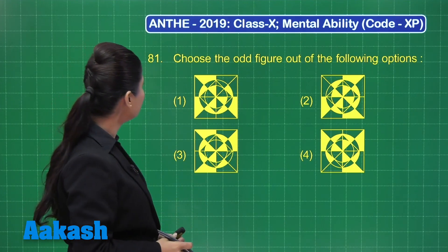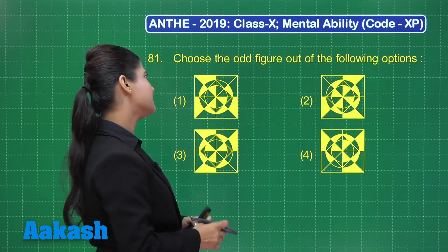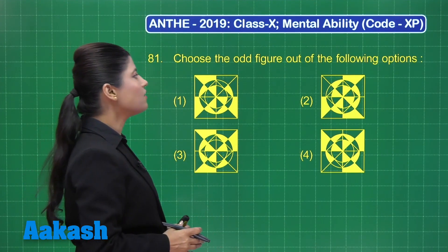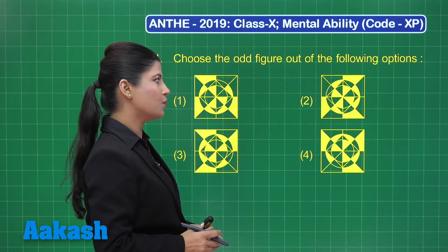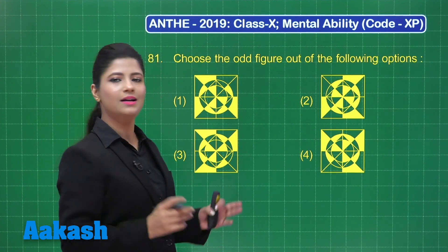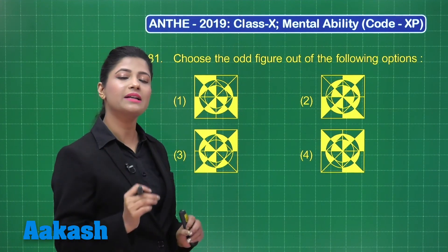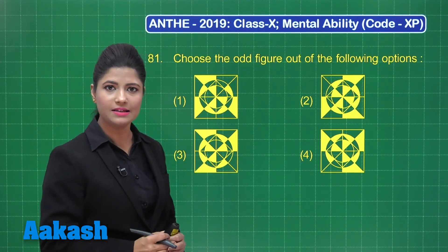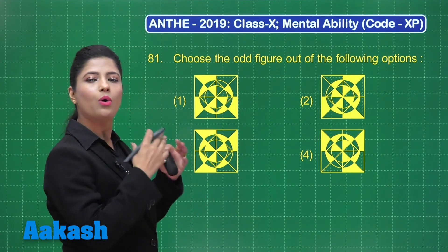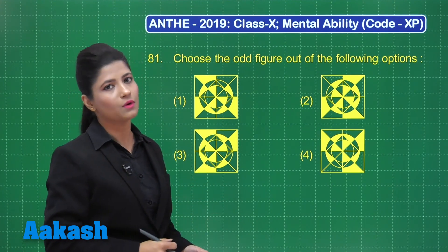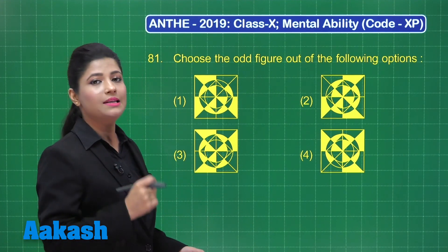Here I have question number 81. It states: choose the odd figure out of the following options. You will find a specific pattern in all the figures, but one of them will not follow the same. Let's obtain that odd one out.